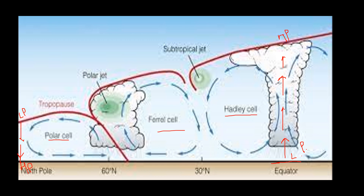Now we need to think about the pattern of air movement in the subtropical regions and the subpolar regions. We can see that if the air is coming from a low pressure region to the high pressure region, it needs to diverge from this point. So it would be diverging here and also to that side, because it cannot move out of the earth, so it only has this direction to go.